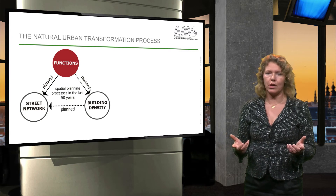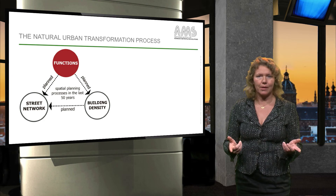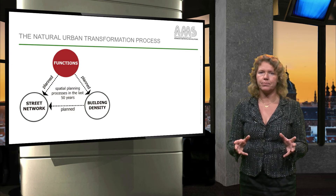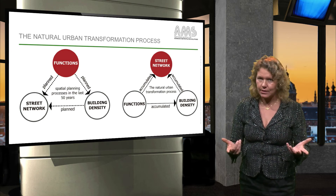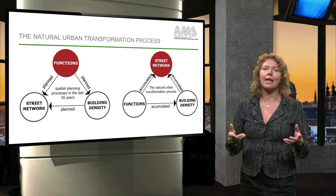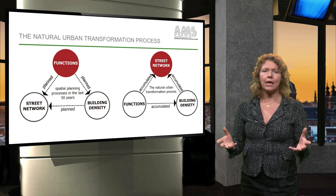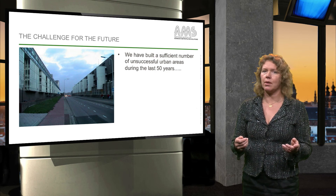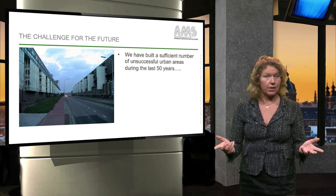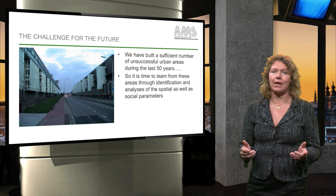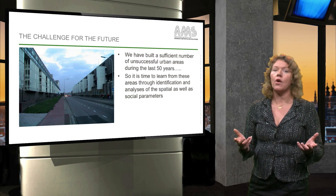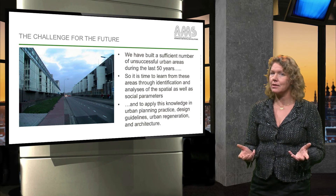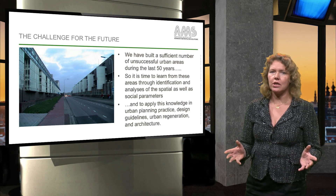At the moment, we are working on a theory on how cities transform naturally. The role of functions has played a very important role in how we have planned our cities. But in order to plan more successful cities, the street network should play an important role. In the end, functions and building density are accumulated by the street network. We have built a sufficient number of badly functioning urban areas during the last 50 years. Now it is time to learn from these areas through identification and analysis of the spatial as well as the social parameters, and to apply this knowledge into urban planning practice, design guidelines, urban regeneration and architecture.